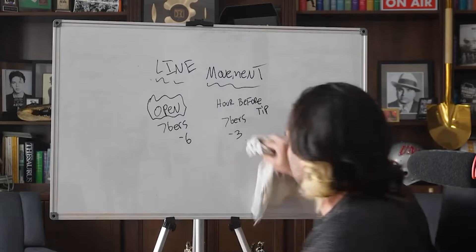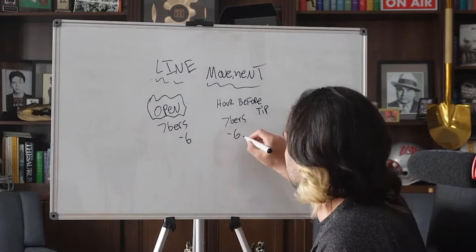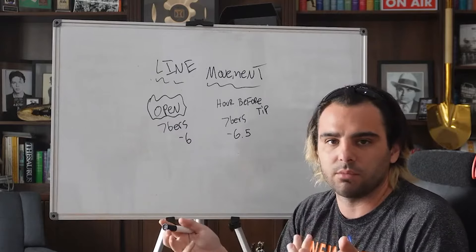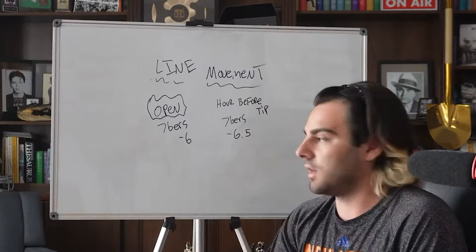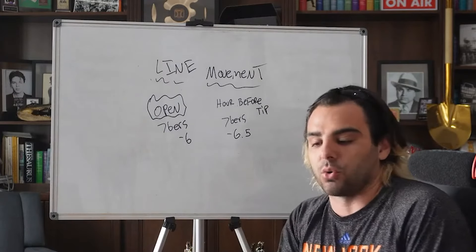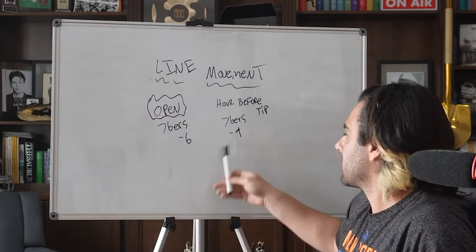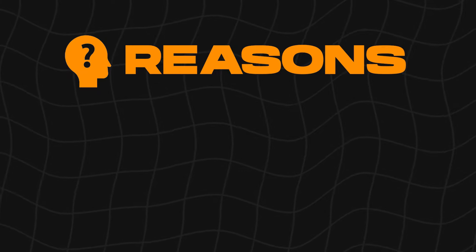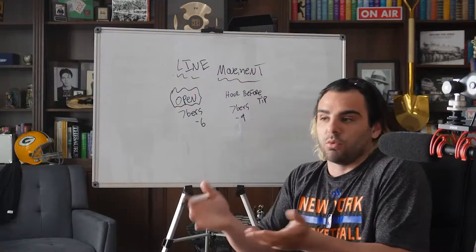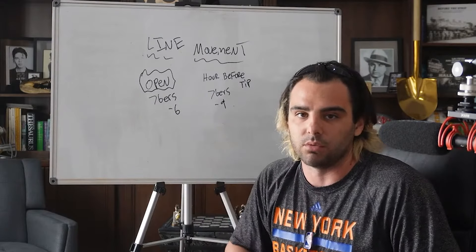What you don't want to see is a game that opened at minus six and is still at minus six an hour before tip — that tells you nothing, don't pay attention to it. You also don't need to act on a half-point move. Focus on games with significant line movement, then go figure out why. It could be injuries, someone sitting out, or the sportsbook put out a soft line and people attacked it.